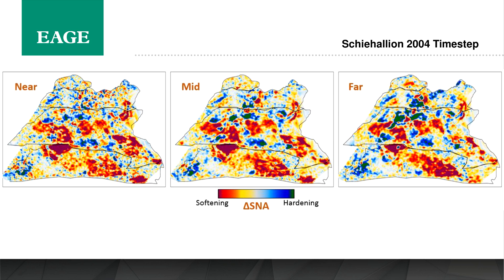This is the data we have: near, mid, and far stacks. These are delta amplitudes between the 2004 time step and the base. The Schiehallion sandstone is basically 5 to 30 meters thick, so this entire map has been extracted from one trough in the seismic. We trained our algorithm on synthetics only — it has never seen real data before. Real data is really noisy while synthetic data is very smooth.